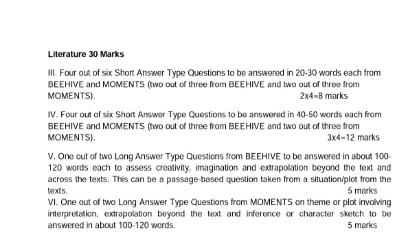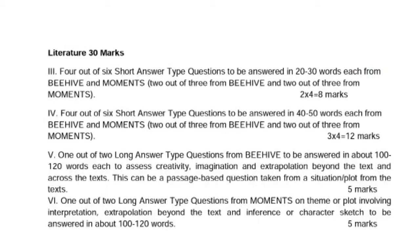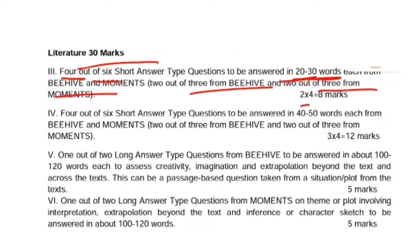Now let's see how literature questions will be asked. Literature carries 30 marks of questions. The first question requires you to attempt 4 out of 6 questions with a word limit of 20 to 30 words. Three questions will be from Beehive and three from Moments. You will get 2 marks per answer, making a total of 8 marks for this question.